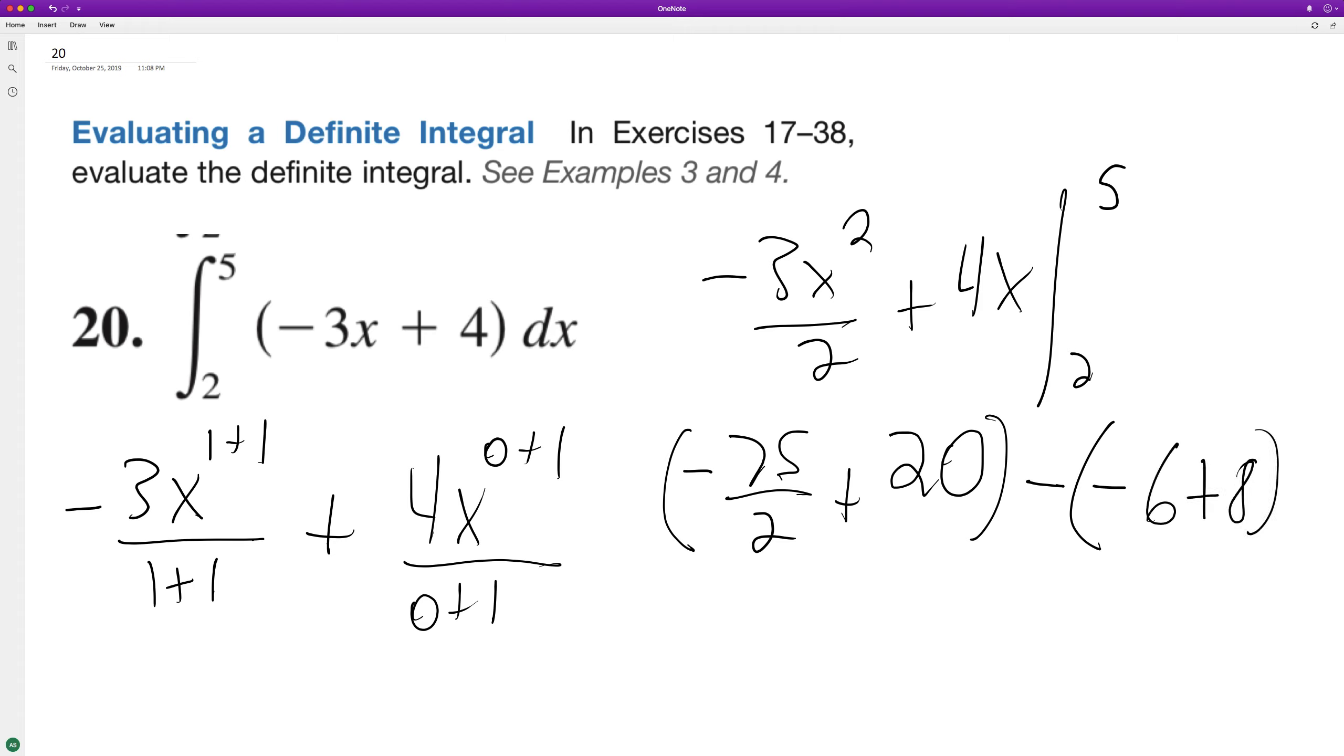So we end up with this is two. So we're subtracting two. So this ends up being negative 75 over two plus 20 minus two. So plus 18 and that's the same thing as 36 over two.